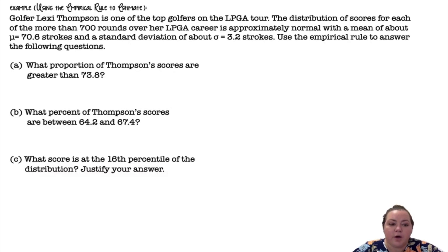All right, so I'm using that empirical rule to answer this question. Golfer Lexi Thompson is one of the top golfers on the LPGA tour. The distribution of scores for each of the more than 700 rounds over her LPGA career is approximately normal with a mean of about 70.6 strokes and a standard deviation of about 3.2 strokes. Use the empirical rule to answer the following question.